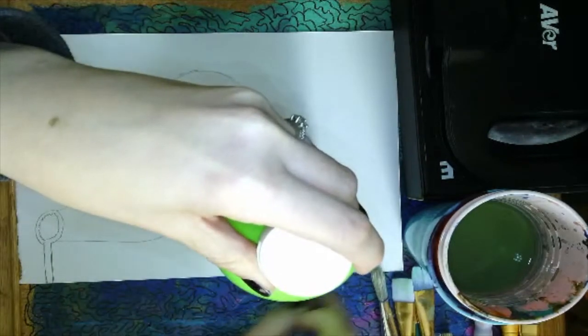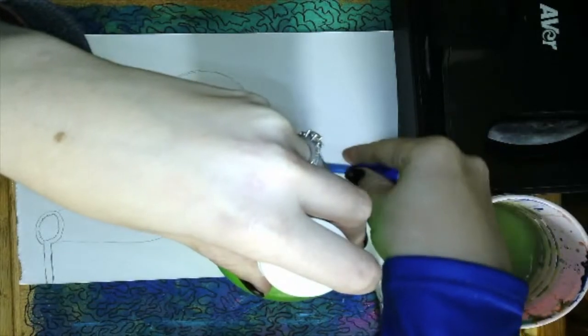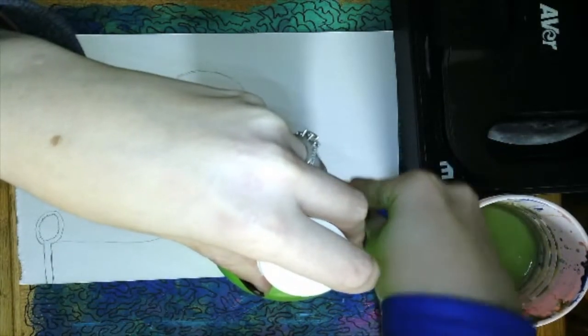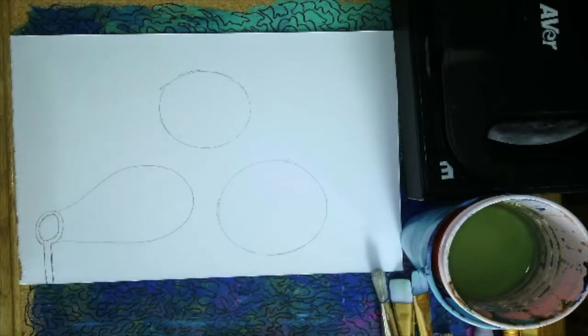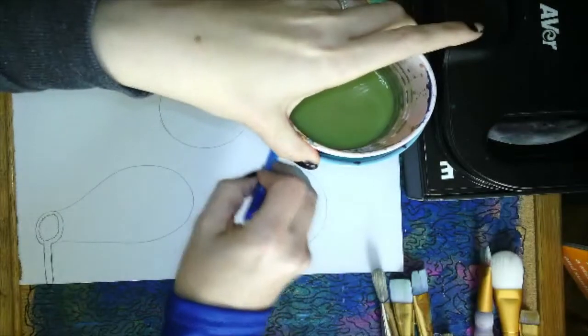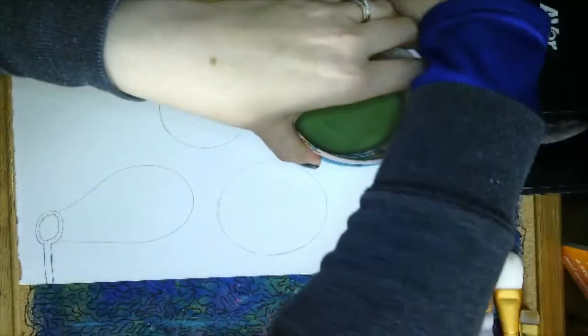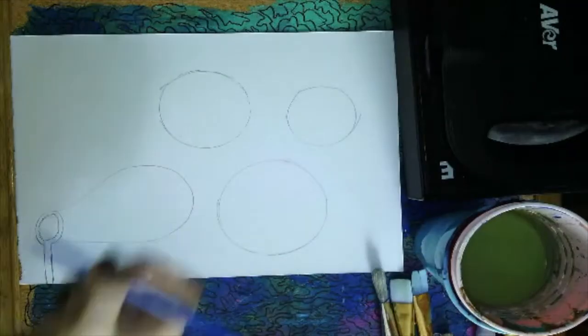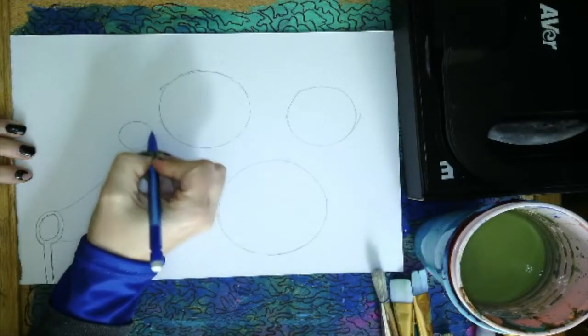So giant container of paint. That was my smaller paint. I'm going to go with the bottom of my water cup. Yes, I painted recently, so my water cup has very dirty water in it. But I could also add some smaller circles as well.